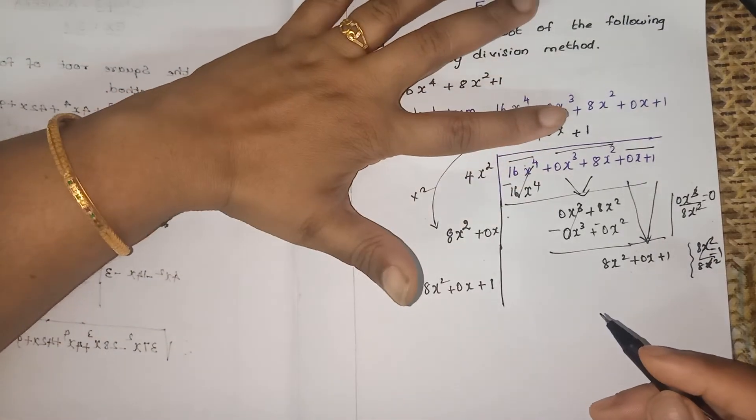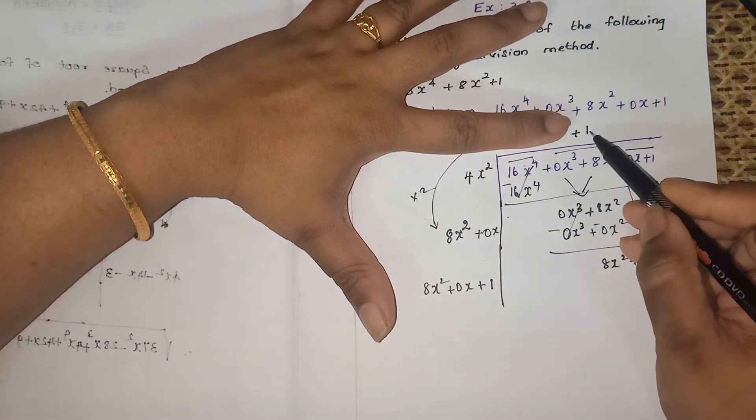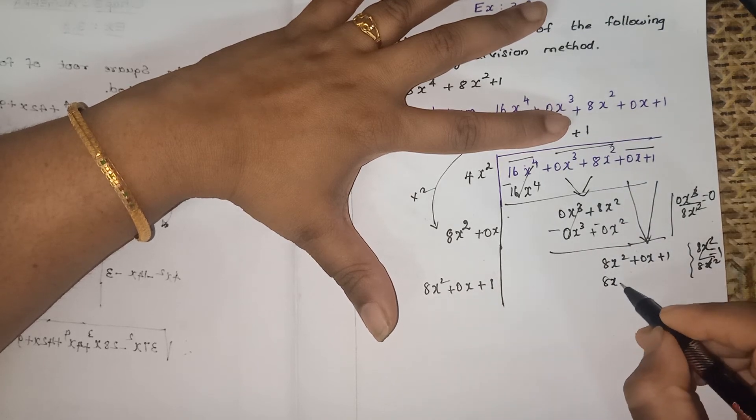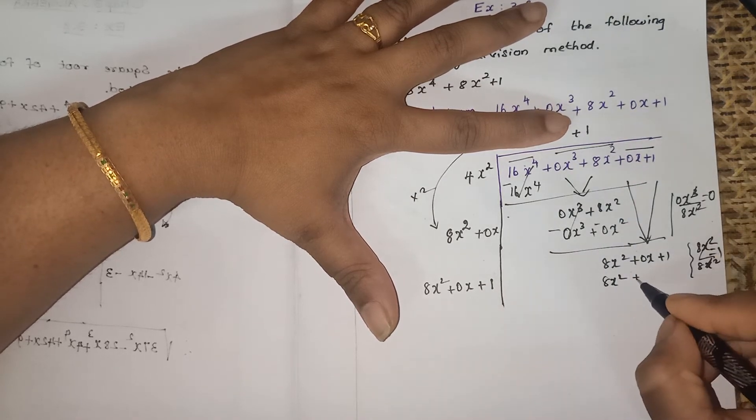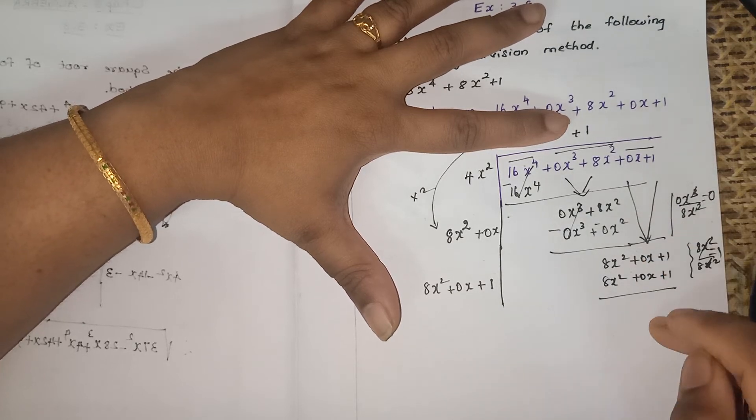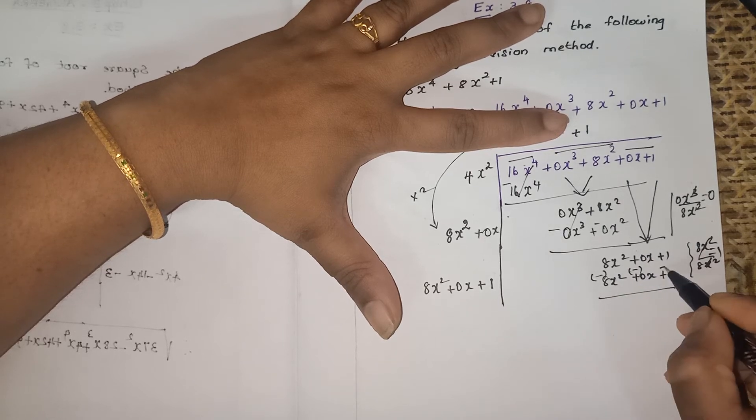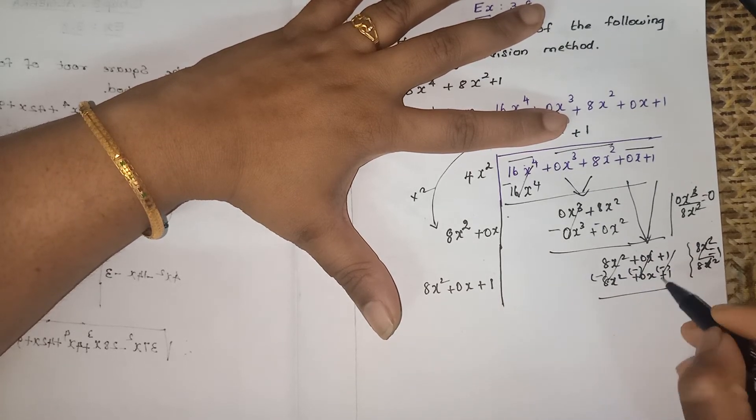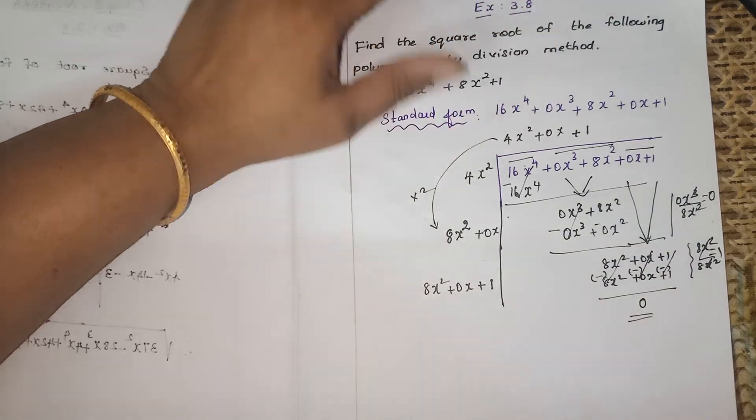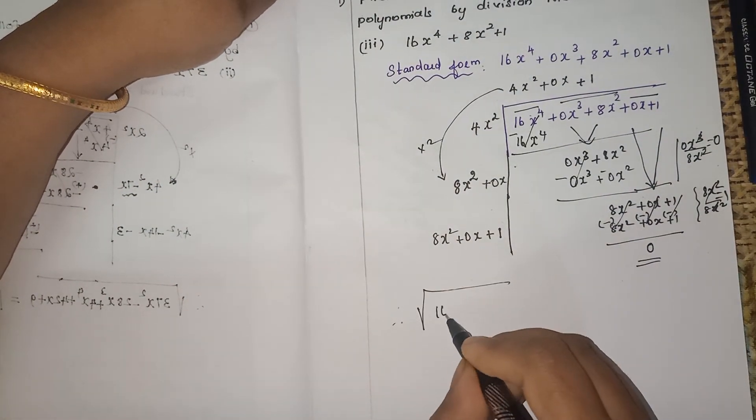So here also you have to put the same term, plus 1. Now multiply this 1 into these 3 terms: 1 into 8x square is 8x square, 1 into 0x is 0x, plus 1 into 1 is plus 1. All the terms you will get are the same. When you change the sign, plus becomes minus, all will get cancelled, so the answer is 0.